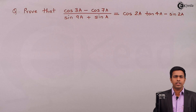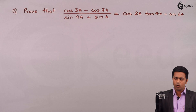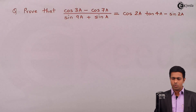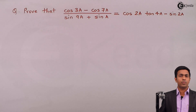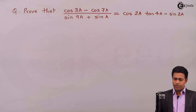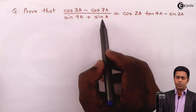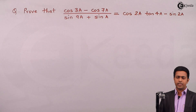Hello students! In this problem we have to prove that (cos 3a minus cos 7a) whole upon (sin 9a plus sin a) is equal to cos 2a into tan 4a minus sin 2a. Now to prove this result, if you see the left hand side then it has the maximum number of terms, so I'll start my solution from the left hand side.